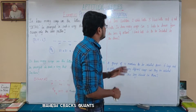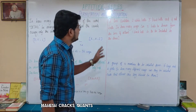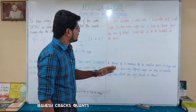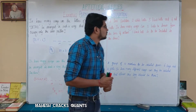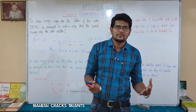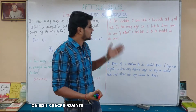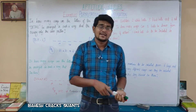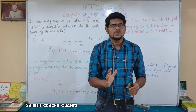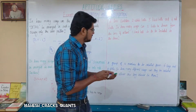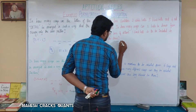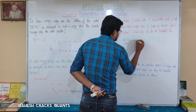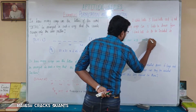Next question: a box contains 2 white balls, 3 black balls, and 4 red balls. In how many ways can 3 balls be drawn from the box if at least 1 black ball is to be included? The cases are: 1 black ball, or 2 black balls, or all 3 black balls.